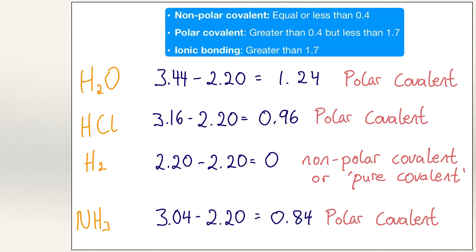Using the electronegativity values in your log tables, you can figure out if a compound is ionic, nonpolar covalent, or polar covalent. You only need to get the values of the elements present, not the quantity — for instance, using water as an example, the electronegativity value for hydrogen is 2.2, and we do not multiply this by 2 just because there are 2 hydrogens present. We always take the lower number from the higher number. Any molecules that are not compounds automatically have an electronegativity difference of 0, e.g. hydrogen gas.